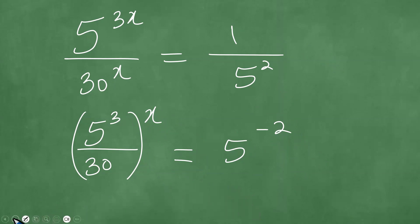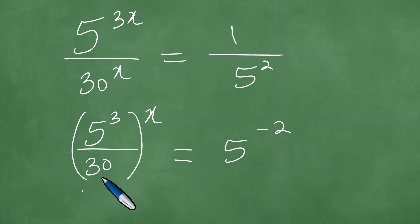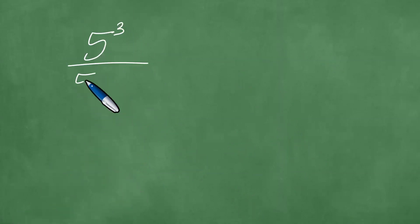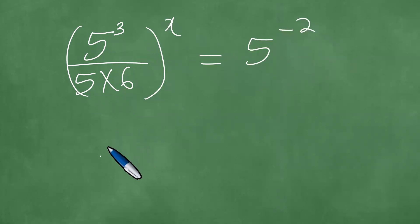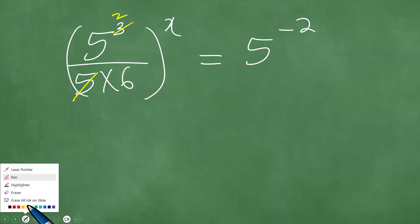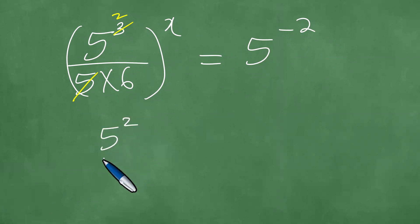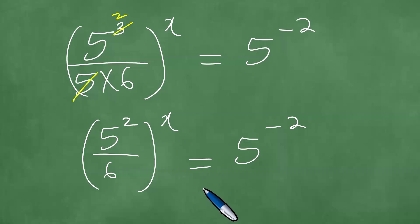We write this as 5 cubed over 30 to the power x, and note that 30 is 5 times 6. So this becomes 5 cubed over 5 times 6, all to the power x. The factor of 5 cancels one factor of 5 in the numerator, giving us 5 squared over 6, all to the power x, equals 5 to the minus 2.